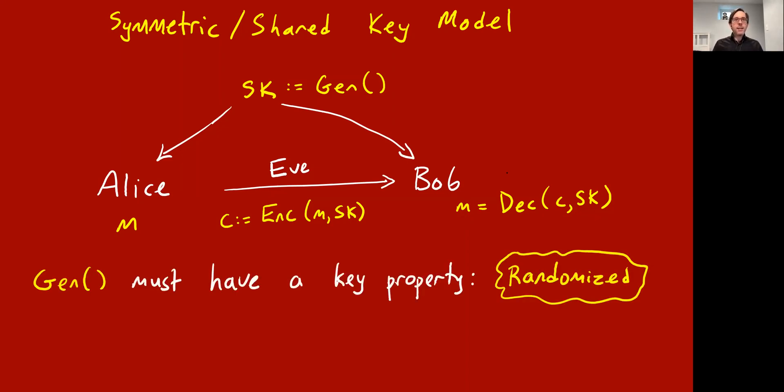In order for this to make sense, the secret key generation algorithm must have a key property, and that's the property of being randomized. This is an essential aspect of all cryptography theory, the use of randomized algorithms for generating keys and running protocols. Point being, it sounds silly to say it, but if the key generation algorithm is deterministic and it's well known, so it's always outputting the same secret key, then Eve can run it herself and get the secret key, and then she's in the exact same position as Bob. But if the generation algorithm is randomized, then it outputs n-bit strings or something, then Eve can run it herself, but that doesn't help her to know the secret key that Alice and Bob agreed on.